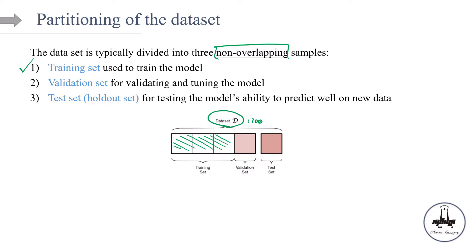The second set is what we call the validation set. Let's say this has 20 observations out of 100, so maybe 20%. This is a set which is used for validating and tuning the model — basically, this is the part where the hyperparameters of the model are being optimized. And finally, there's something we call the test set, and it's usually 20 to 30% of the data — in this example, 20% — and it is used for testing the model's ability to predict well on new data.